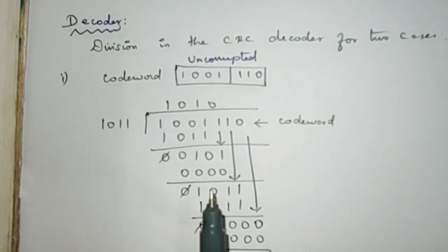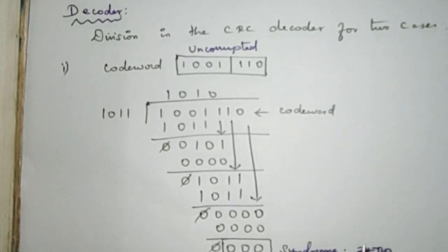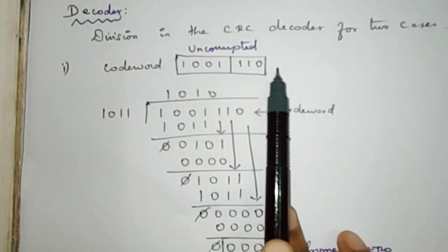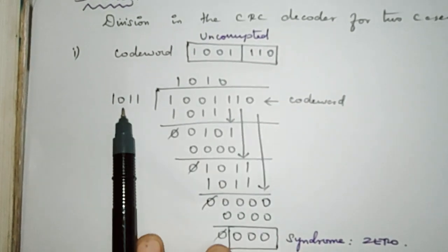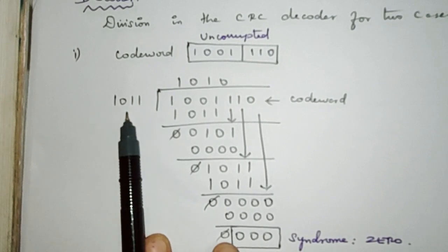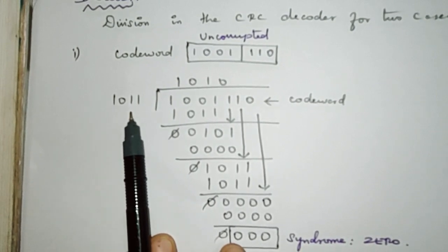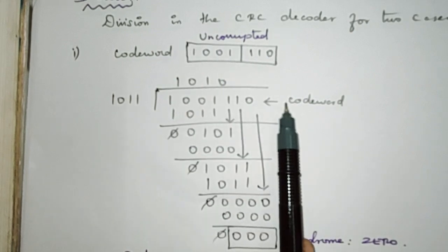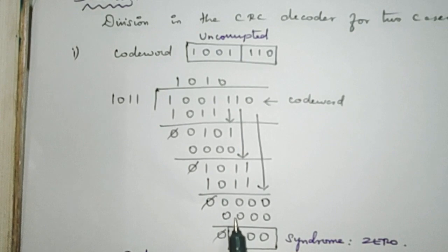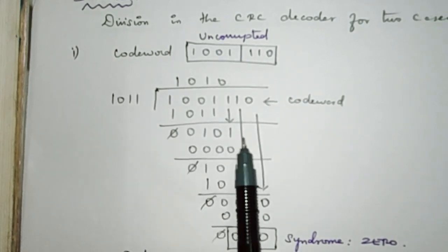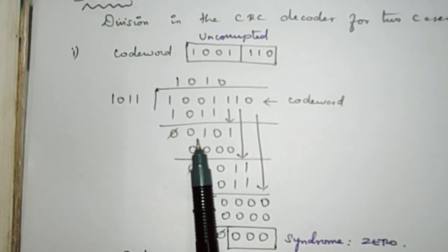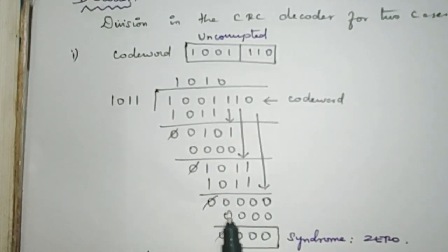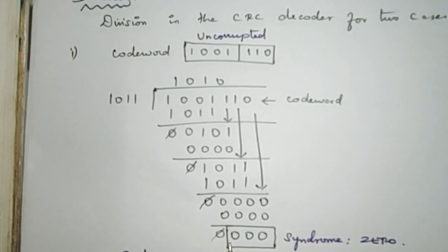Our encoder part is over. In the decoder part we have two cases. In the first case, our code word is the same uncorrupted code word we got from the encoder: 1001110. The CRC generator and divisor remain the same for the decoder as well, which is 1011. We use this code word as the dividend and perform the same modulo-2 XOR division operation. Going through the steps — 1 time gives a value, the leftmost bit is 0 so we use 000 as divisor — and finally we get the value 000.